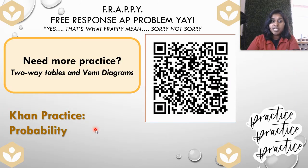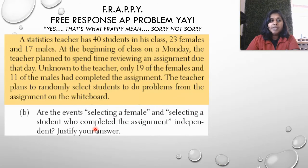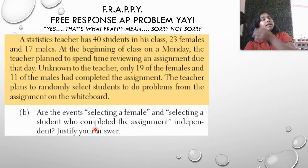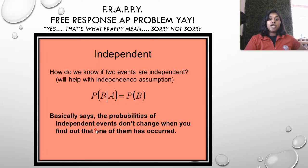Moving on to question B. If you need practice on probability, two-way tables, and Venn diagrams, you can go here. Question B: Are the events selecting a female and selecting a student who completed the assignment independent? So here we're dealing with independence and dependence. This is going to go back and forth between two major chapters, the probability chapter and the random variables chapter.